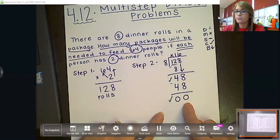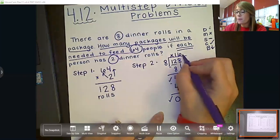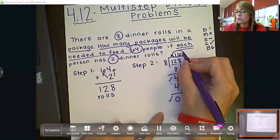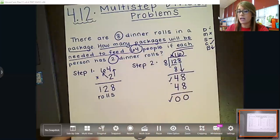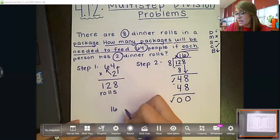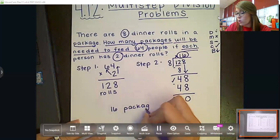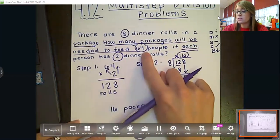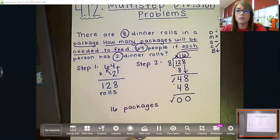Do I have a remainder? No, I do not. So that means that my answer, my quotient is just 16. So we are going to have to buy 16 packages of rolls if we want to feed 64 people two dinner rolls a piece.